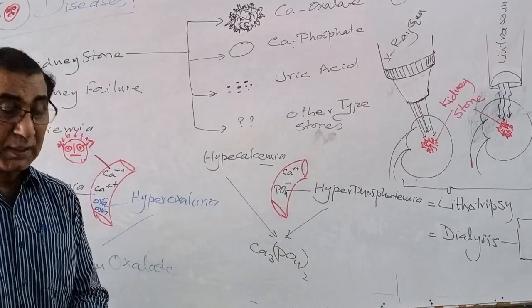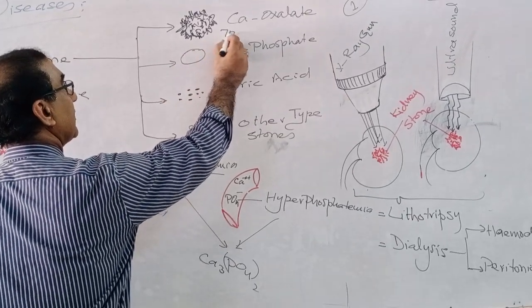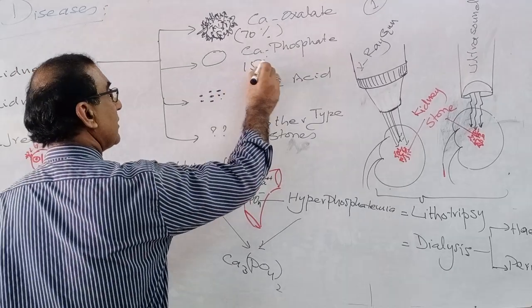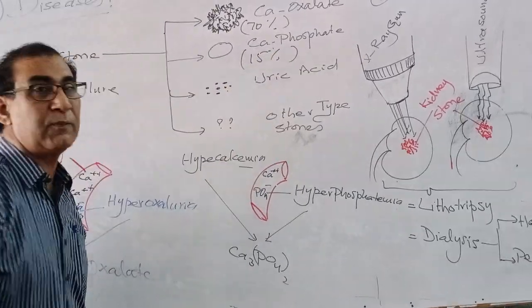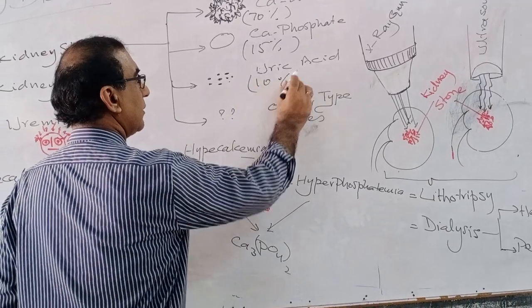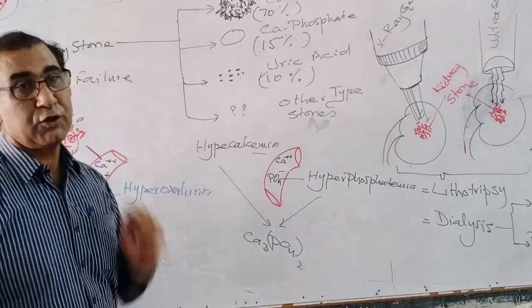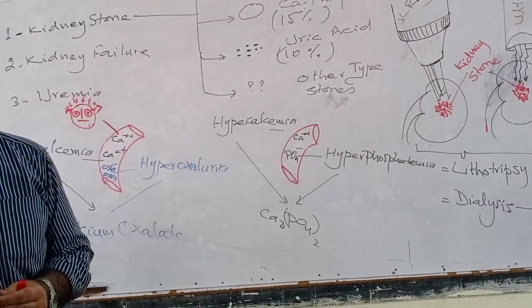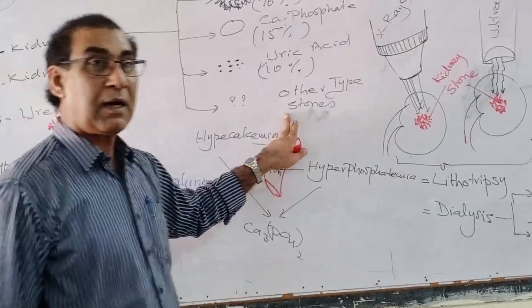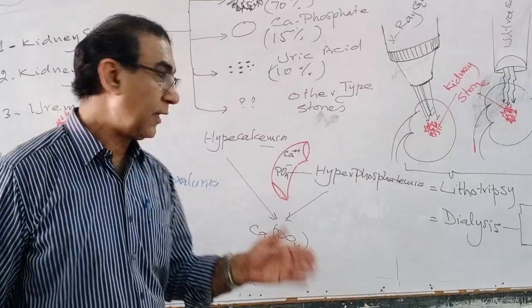The occurrence of calcium phosphate is about 70% in the human population. Fifteen percent is calcium oxalate. And ten percent of the stones are uric acid. And the others are about five percent.